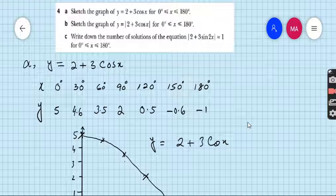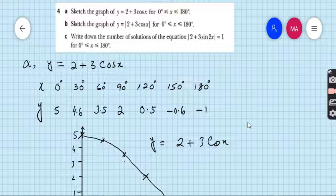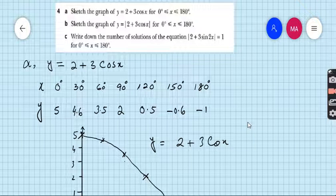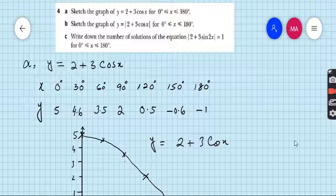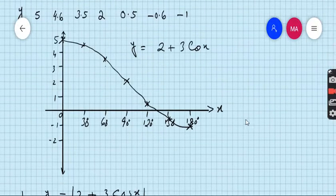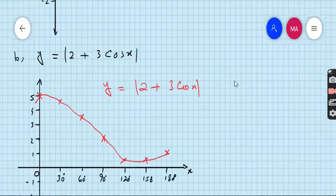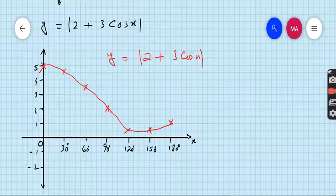The next part C. Write down the number of solutions of the equation 2 plus 3 sin 2x equals 1. Very easy. This is part C.